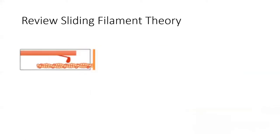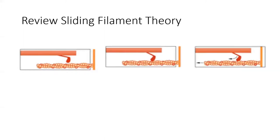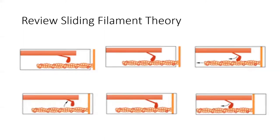Thinking back to the sliding filament theory — myosin attaches and pulls, detaches, attaches and pulls. If we're able to start this process sooner, we can produce more force at higher velocities. That's the benefits within the muscular system.